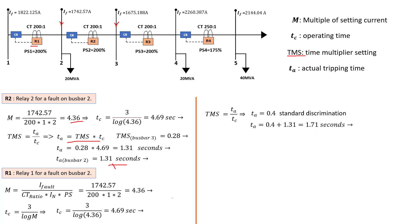That TA of 1.31 seconds was calculated for relay 2 on the fault on bus bar 2 — that is the value used here. Because we are calculating TMS for relay 1 on bus bar 2, we use the TA from relay 2 on bus bar 2. Following this section-by-section procedure is how protection is provided when using IDMT relays with grading margins in a differential protection setup. Our TMS is then equal to 0.375, and we will use this TMS to calculate TA for the same relay for a fault on bus bar 1.